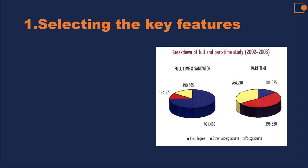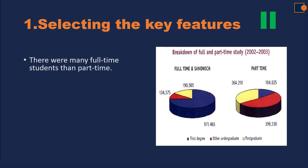I want you to pause the screen and think about what three key features you can write about this illustration. Write it down and then unpause and check with the answers. Here's the first answer: there were many more full-time students than part-time students. If you look at the charts and add up all the numbers for full-time and sandwich, then add up all the part-time numbers and compare, there is a significant difference — full-time has more students compared to part-time.